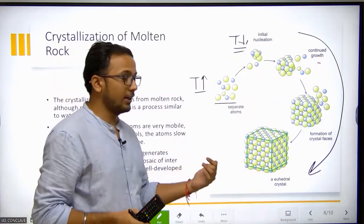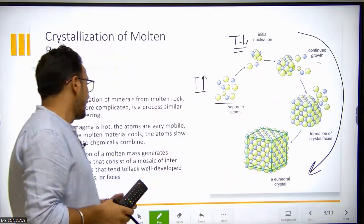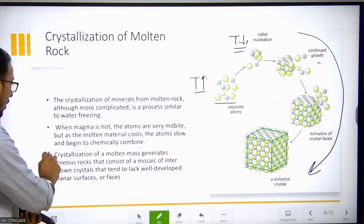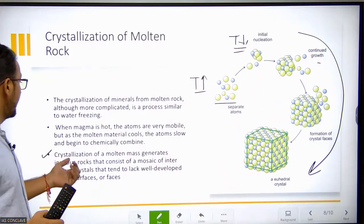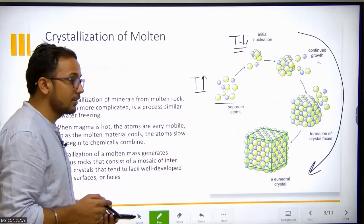It can be elongated, it can be octahedral, and it can be a hexagonal structure. Crystallization of the molten mass generates igneous rock that consists of a mosaic of intergrown crystals that tend to lack well-developed planar surfaces.